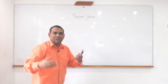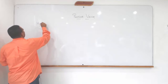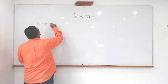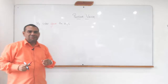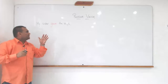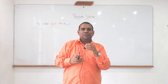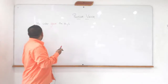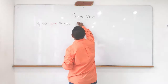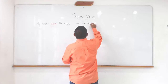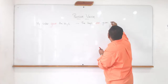We have already seen this. I'm going to retake what we have studied. 'My sister gave the keys.' We have the three essential components: the subject, the verb, and what constitutes the information as an answer to the question 'what.' My sister gave what? The keys. And we already know how to order the transformation: 'The keys were given by my sister.'